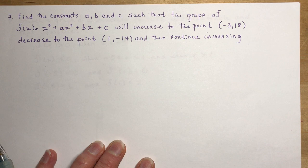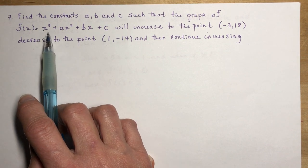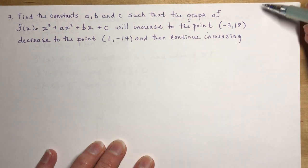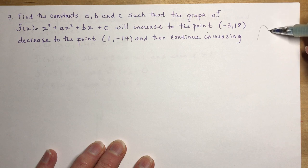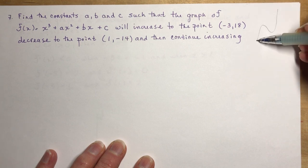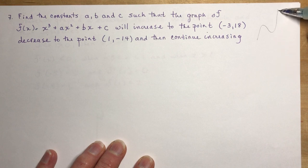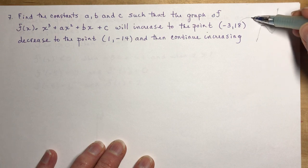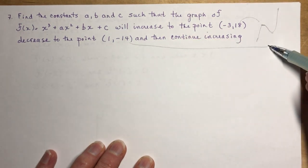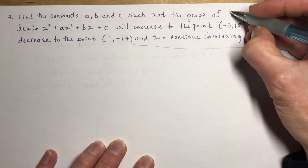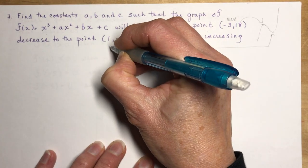So what you want to do is, first of all, look at this equation. It's a cubic function. It says it's increasing to this point and then decreasing and then increasing. So it's just basically a cubic function doing this. It's increasing to (-3,18), decreasing to (1,-14), and then continues to increase.